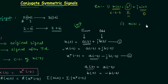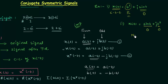Let's solve another problem. Signal x(t) = sin(t) + j·t³·sin(t). sin(t) is an odd signal and t³ is also an odd signal, so the real part is odd as well as the imaginary part is odd. Therefore, this signal is not conjugate symmetric.